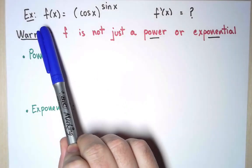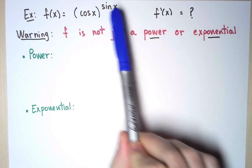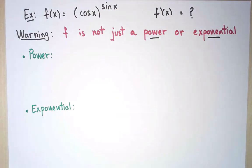I will illustrate logarithmic differentiation with an example. I consider this function f, defined by f equals (cos x)^(sin x), and I want to take its derivative. The first thing to notice is that this function is not merely a power or an exponential. What do I mean by that?